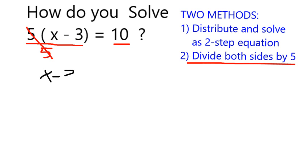So now I just have x minus 3 is equal to 10 divided by 5. Of course, I need to divide by 5 on both sides. 10 divided by 5 is going to give me 2.